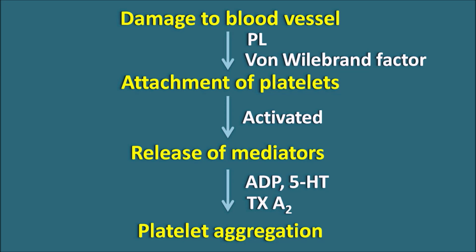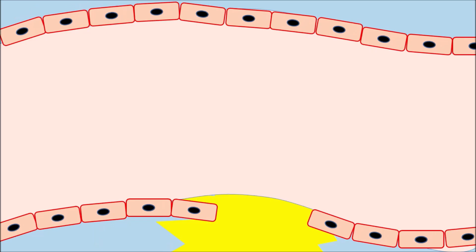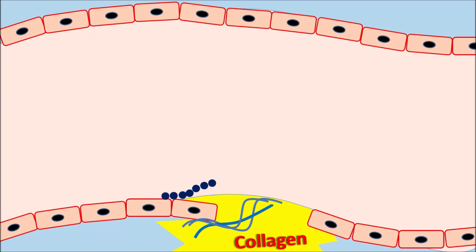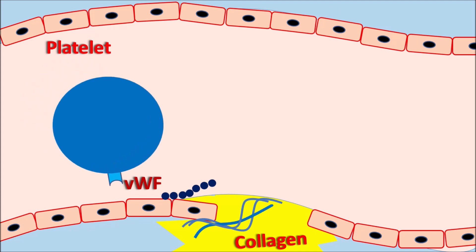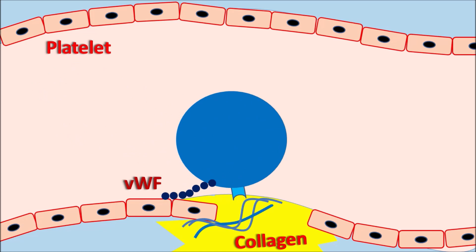Now let us see these processes in detail and what the drug targets are. When there is damage to the blood vessel, the endothelial layer is ruptured and collagen fibers are exposed. At this situation, Von Willebrand factor is released, which is responsible for the binding of the platelets to the endothelium. Platelets in the resting position come to the site of injury and can be attached through Von Willebrand factor, as well as through GP4 receptors binding to collagen. This is the first step: attachment of the platelet to the site of injury.